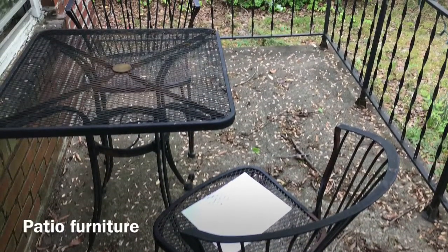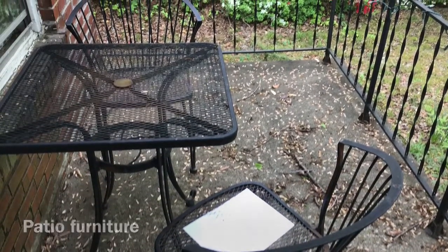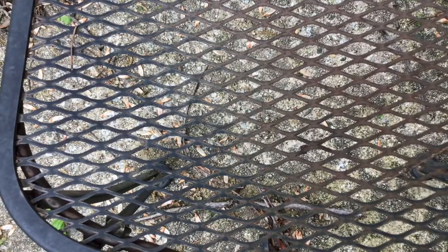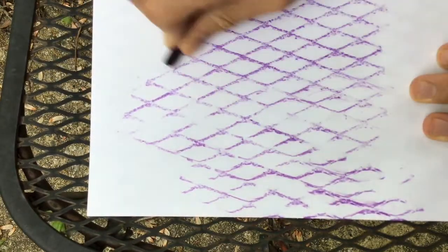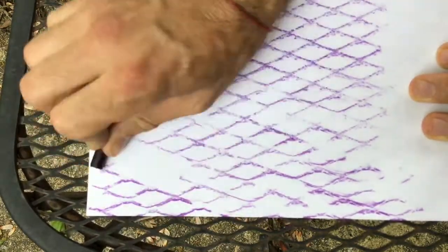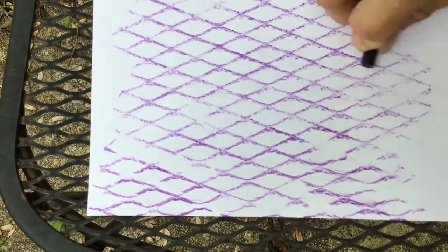And patio furniture, that's another great source of texture. It's got this wiry texture here. Make sure you get all your leaves or sticks out of it, and then go ahead and rub. You get this cool wavy kind of pattern. It looks kind of like a fence too, or scales.